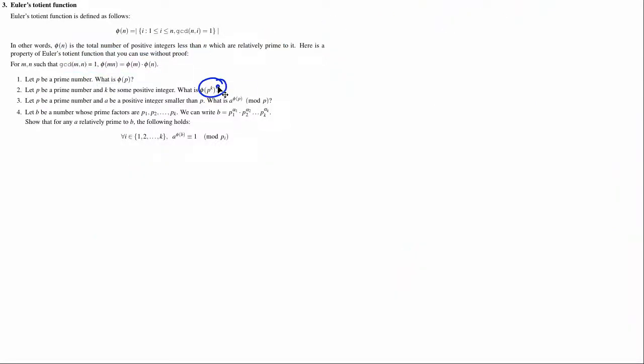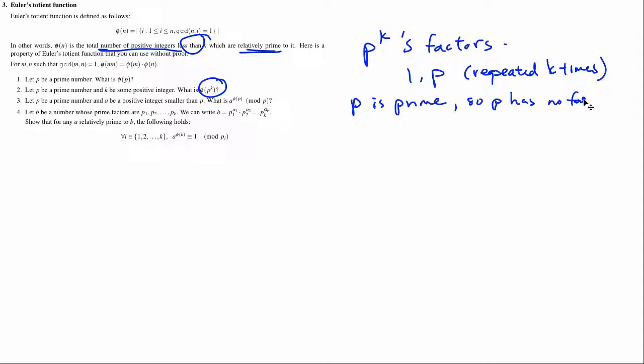For part 2, we're just looking at phi of p^k. And so we need to find the total number of positive integers less than p^k that are relatively primed to p^k. Now, what factors does p^k have? Basically, the only factors that p^k has is 1 and p repeated k times. And this is because p is prime, so p has no factors of its own. So p has no factors of its own except 1 and p.